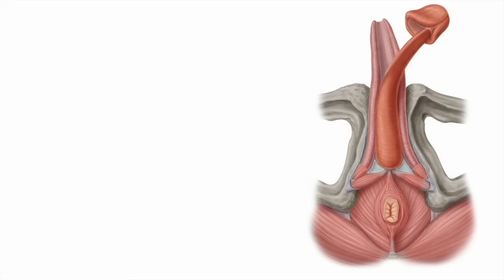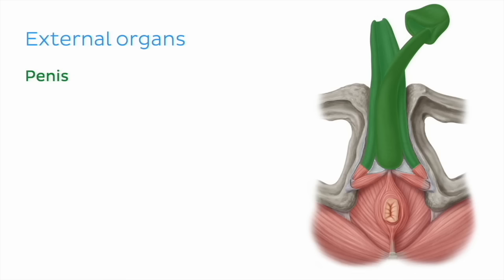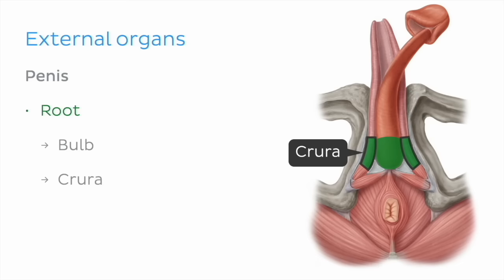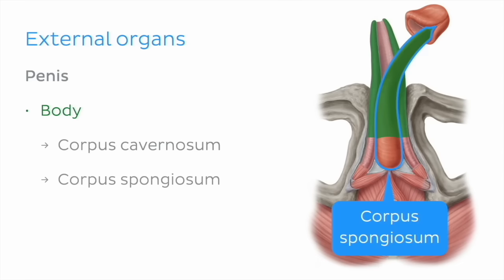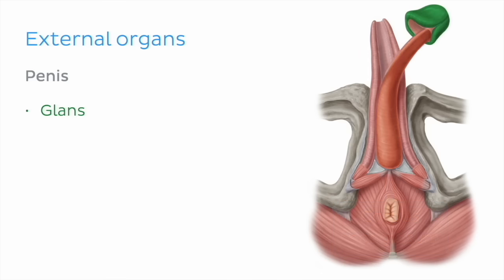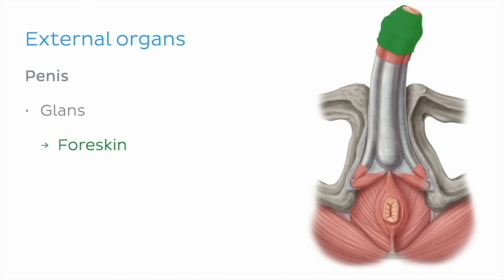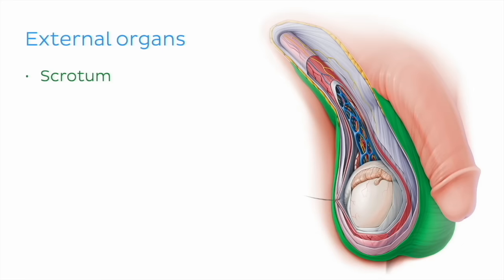Continuing on, we explored the external reproductive organs, beginning with the largest component, the penis. We reviewed how the penis can be divided into the root, which is made up of the bulb and the crura, the body, which is made up of the paired corpus cavernosum and the corpus spongiosum, as well as the glans, which is covered by the prepuce or foreskin. Finally, we looked at the scrotum, which houses the testes, epididymis, and the distal part of the spermatic cord.